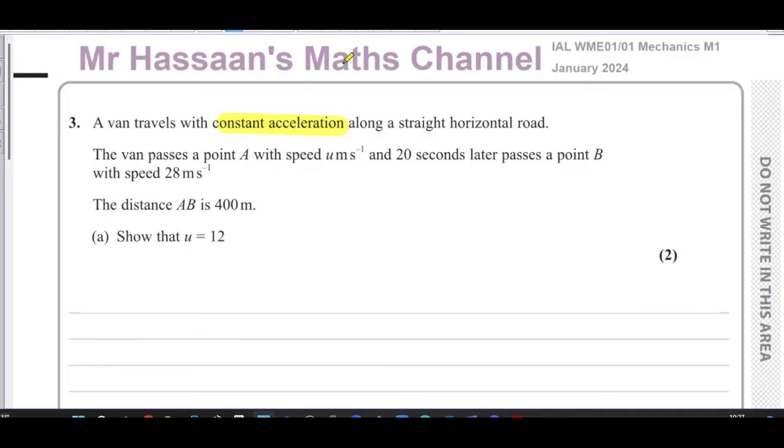The van passes a point A with a speed of U meters per second and 20 seconds later passes a point B with speed of 28 meters per second. The distance AB is 400 meters. Show that U equals 12. So this is like, you can just use SUVAT between A and B.